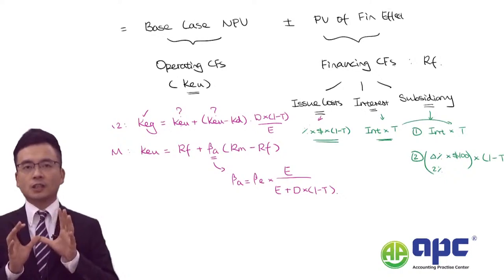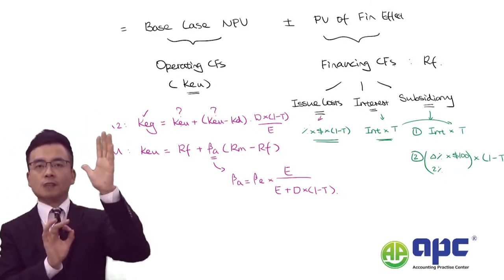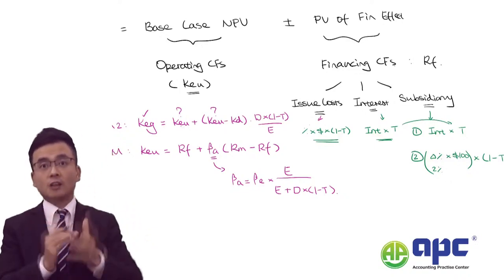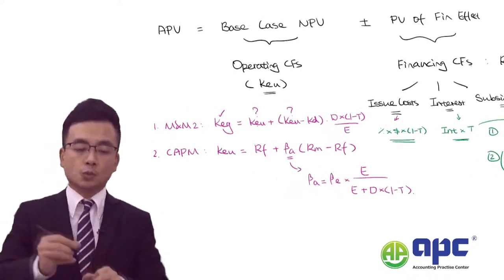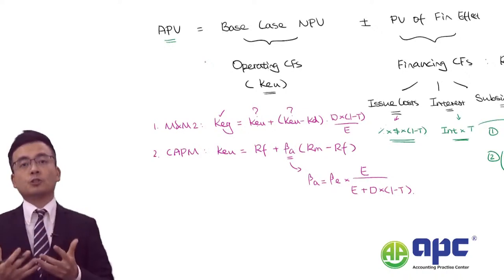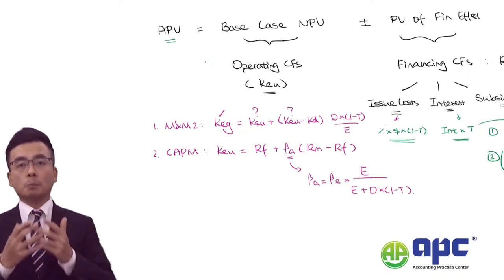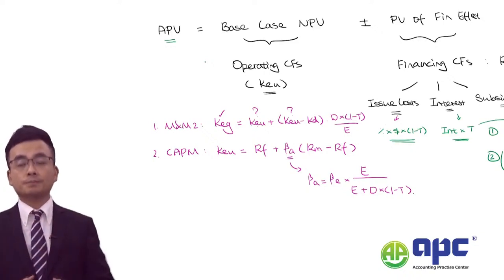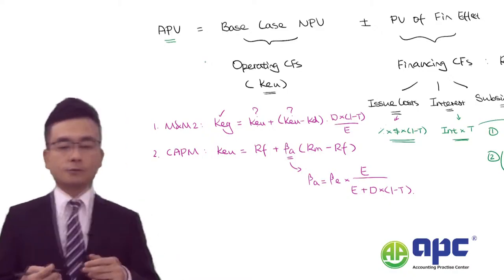Using these financing cash flows for each year and discounting them at the risk-free rate, then combining with the base case NPV, gives the APV. If the APV is positive, proceed with the project — it will bring positive value to the business and maximise shareholders' wealth.